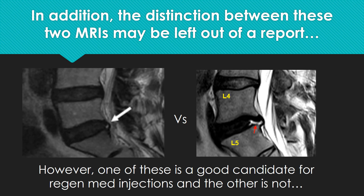In addition, we have two high-intensity zones here, one on the left, one on the right — or a disc tear. One of these is a great candidate for regenerative medicine injections into that disc; the other probably not. Do you know which? And if you don't, you have to look at the film to find out, not the report.